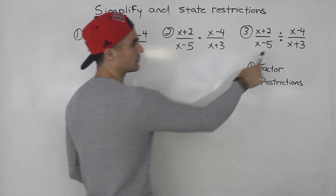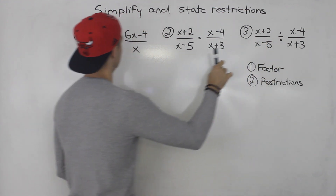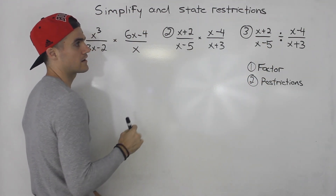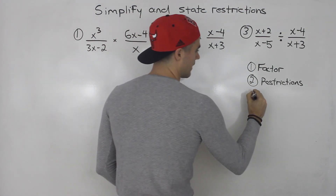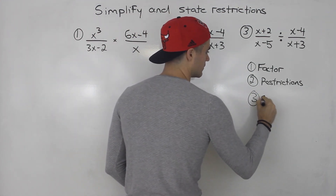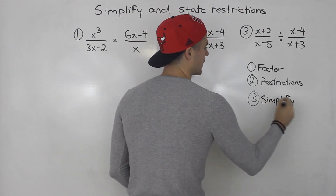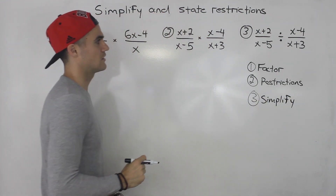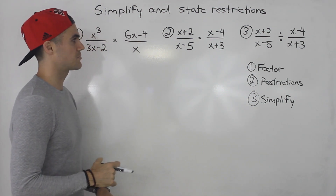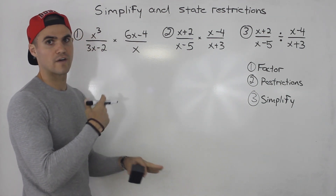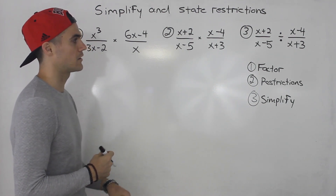It's going to be a little bit different when you're dividing, but once we get to question three — which is the only division problem — I'll explain what the difference is. Then you just simplify. The simplifying process has a preliminary step, but it's pretty much the same thing: you're looking for common factors to cancel out in both the numerator and the denominator.